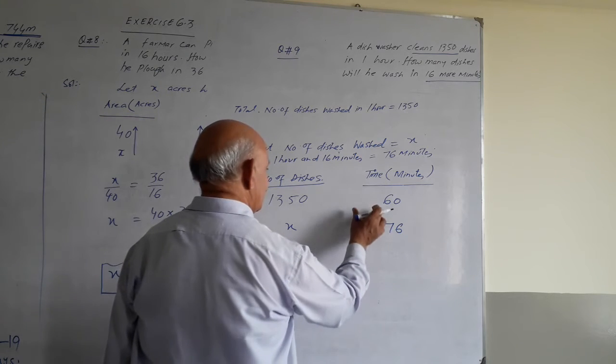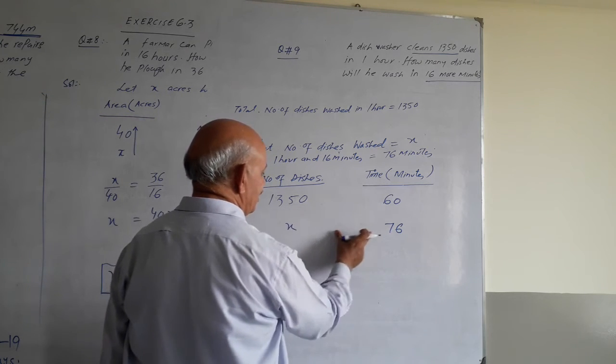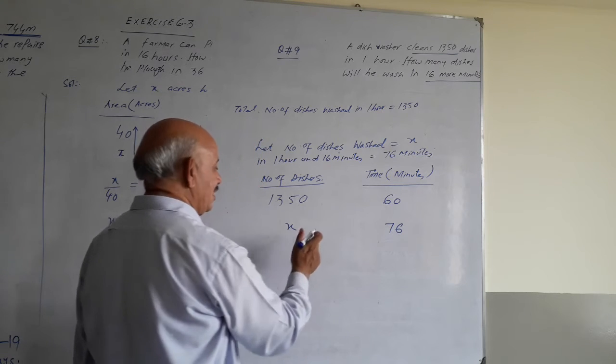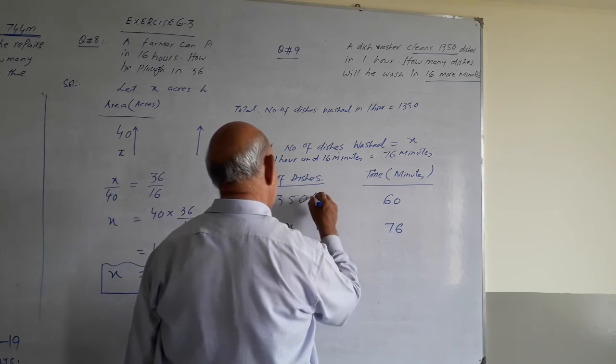So you have to tell how many dishes wash in 1 hour and 16 minutes. Direct proportion.